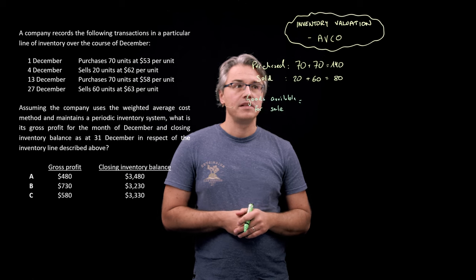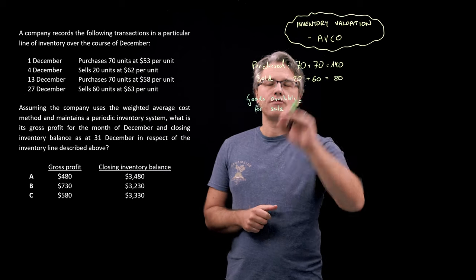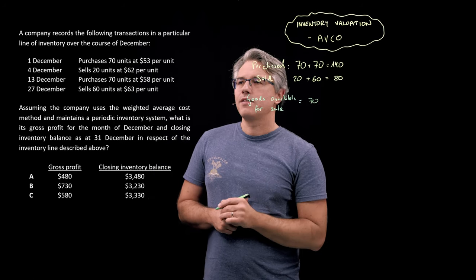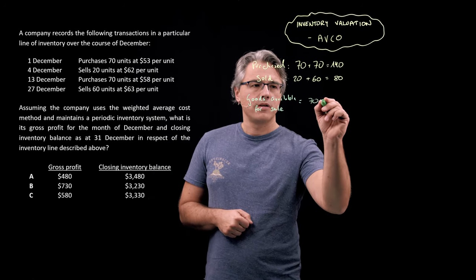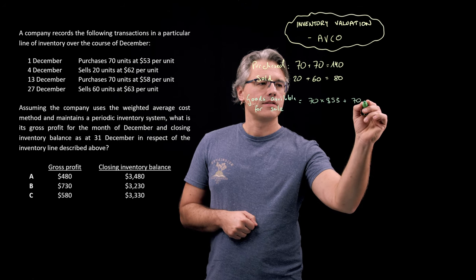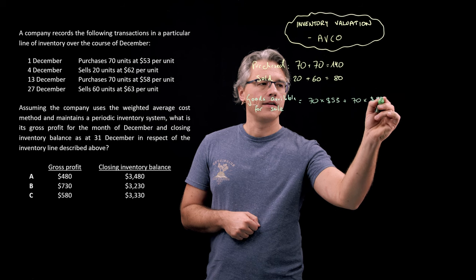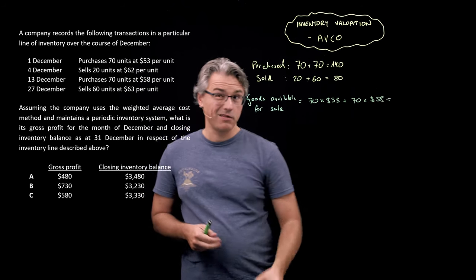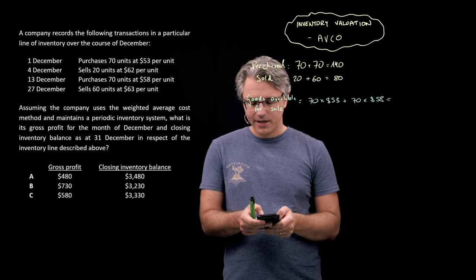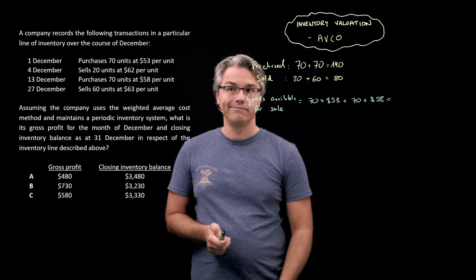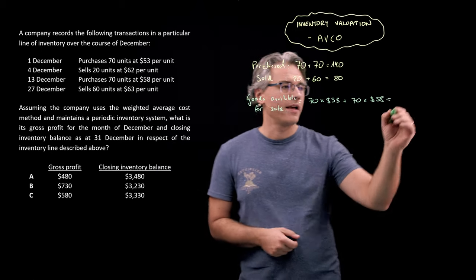I'm also going to measure the overall value of the goods available for sale during the period. I'm assuming the company had no beginning inventory, as there is no information to point towards that in the question. So what was available to be sold? It was these 140 units purchased throughout the period — comprising 70 units purchased at a price of $53 and another 70 units at a unit price of $58 each. 70 times 53 plus 70 times 58 gives $7,770.